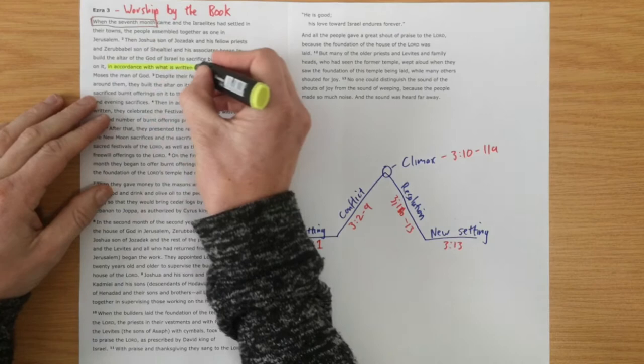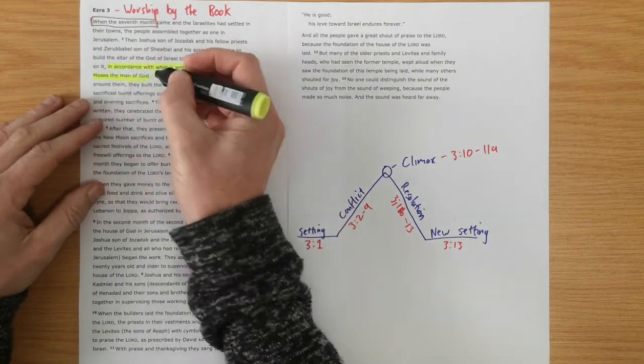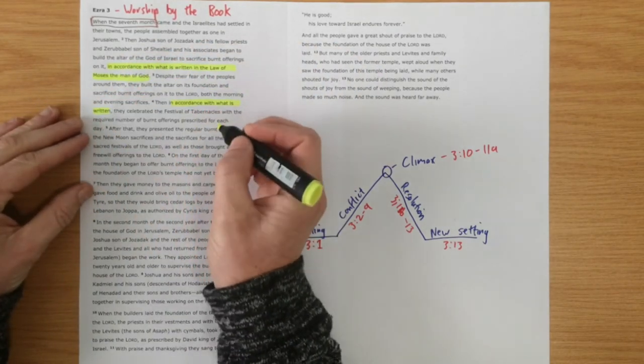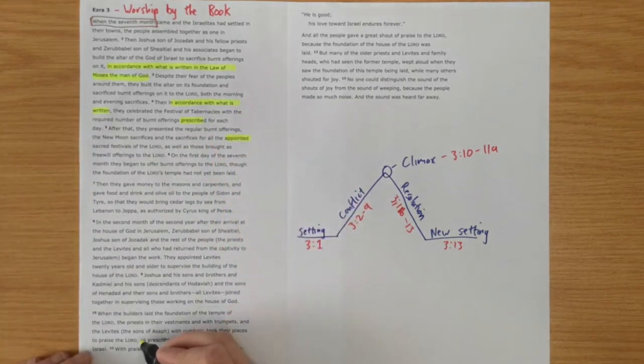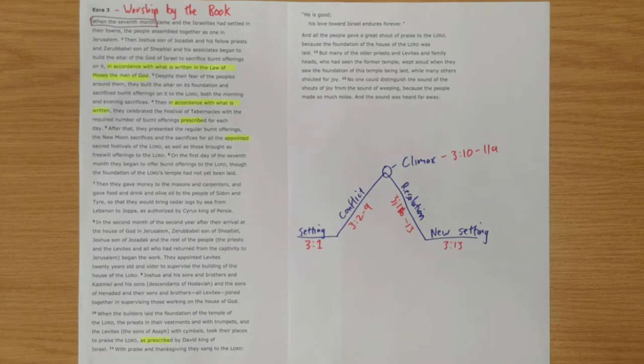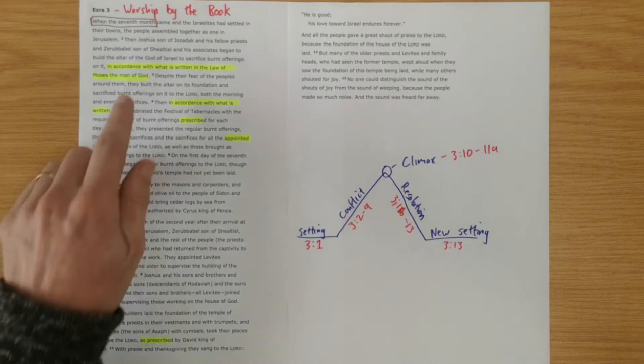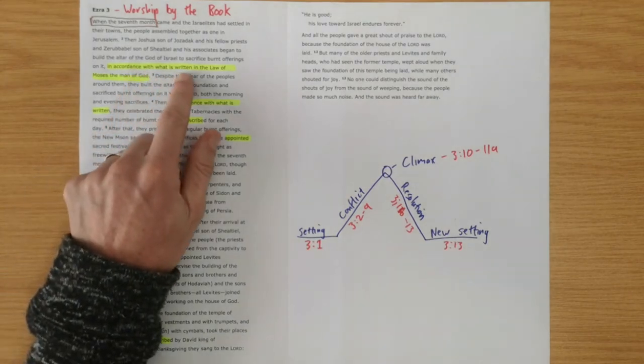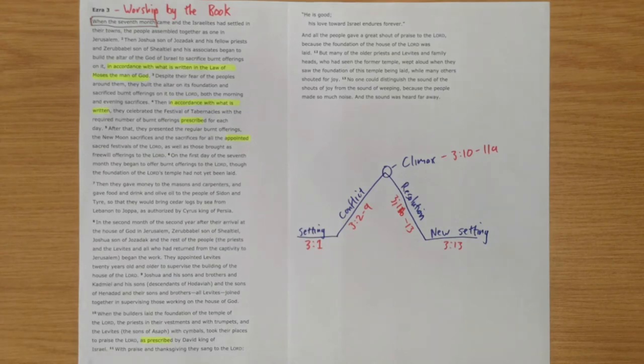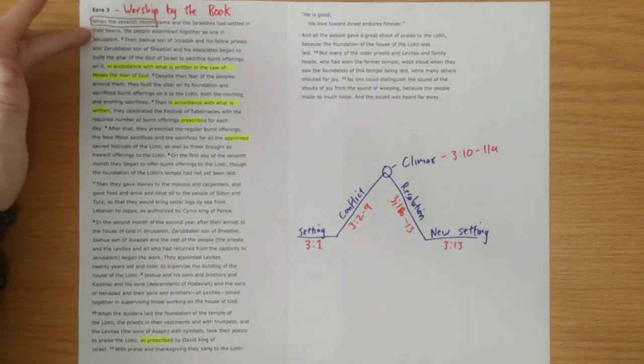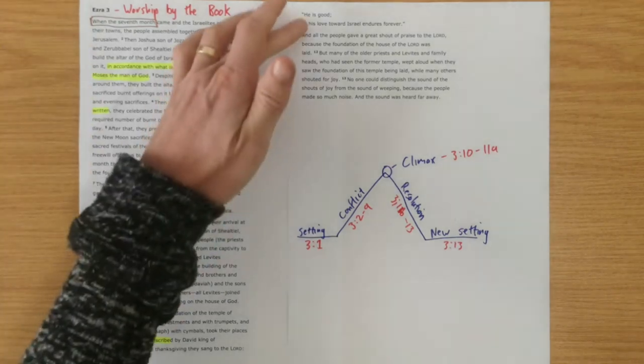But it's a worship that starts from a right knowledge of God and that's why it's important for us to see that it keeps on repeating in accordance with what is written or as prescribed or the appointed feasts as prescribed. So here we have a community of God's people worshiping God but it's flowing out of a right understanding of God through his word. And then that is overflowing from their hearts in both what is seen and then what is heard.